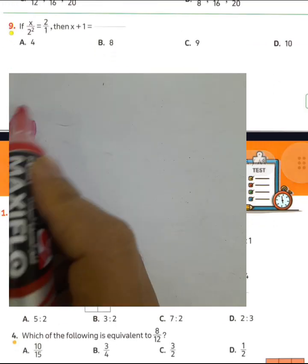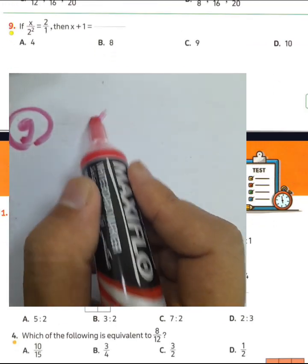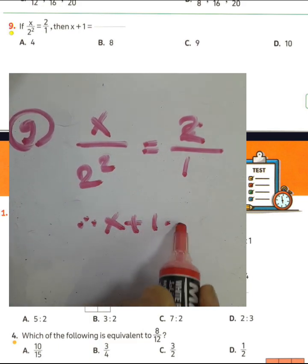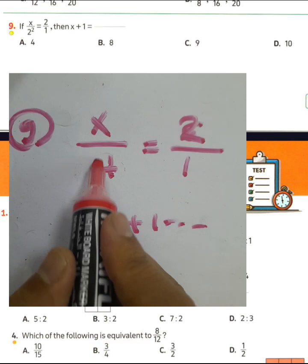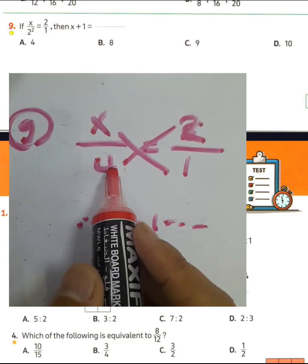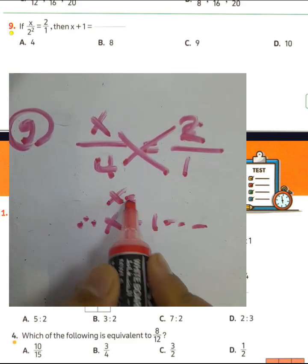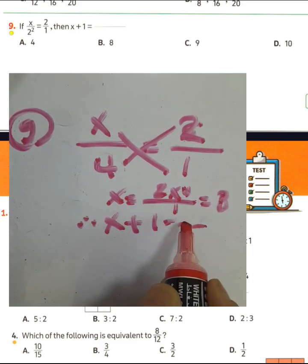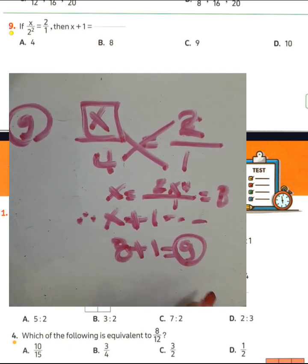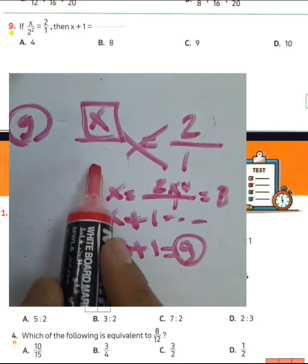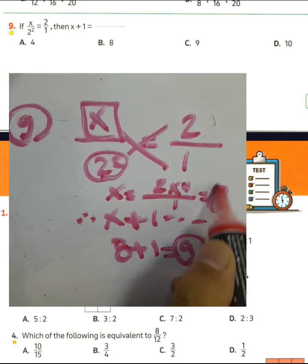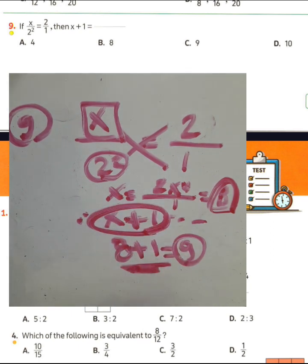Question number nine: we have x over 2 squared equals 2 over 1. We need to find x plus 1. We know 2 squared equals 4. Using the cross multiplication rule: x times 1 equals 2 times 4, so x equals 8. We want x plus 1, so 8 plus 1 equals 9. The result is 9. To confirm: 2 squared means 2 times itself equals 4, then 4 times 2 equals 8, and 8 divided by 1 equals 8, so x equals 8. Therefore x plus 1 equals 8 plus 1 equals 9. Choose letter C.